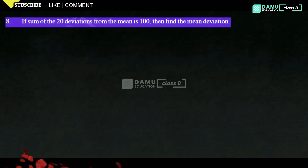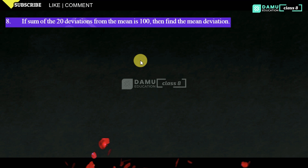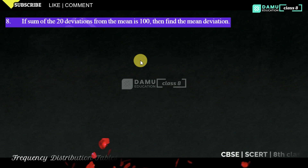Hello viewers, thanks for watching our videos. If you haven't subscribed yet, please subscribe. Our eighth question is: if the sum of 20 deviations from the mean is 100, then find the mean deviation. They have given that the number of deviations is 20.